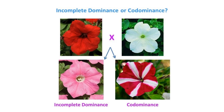Let's take another look at the flower example. If we cross a red flower, homozygous dominant, with a white flower, homozygous recessive, and we get a pink flower, that is incomplete dominance — a blending of the two traits. The incomplete part means that the dominant allele does not completely overwhelm the effects of the recessive. If the heterozygous individual is striped — separate red bits and separate white bits — that's codominance, where each allele is having an effect on different parts of the flower.